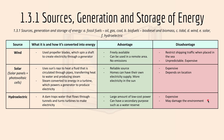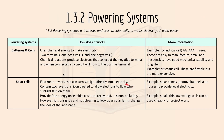Moving on to 1.3.2 powering systems: batteries and cells use chemical energy to make electricity. There are two terminals — one positive and one negative. Chemical reactions produce electrons that collect at the negative terminal, and when connected in a circuit, they flow to the positive terminal. There are cylindrical cells and prismatic cells. Solar cells are electrolytic devices that turn sunlight directly into electricity. They contain two layers of silicon treated to allow electrons to flow when sunlight falls on them. They provide free energy once initial costs are recovered and are non-polluting.